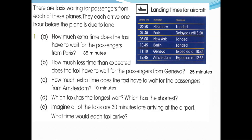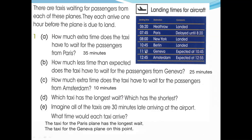Question B: which taxi has the longest wait? Paris - 35 minutes, which we already calculated in question one. Which taxi has the shortest wait? Geneva, because that plane arrived early so the taxi actually waits less time. The taxi from the Paris plane has the longest wait, and the taxi from the Geneva plane has the shortest wait.